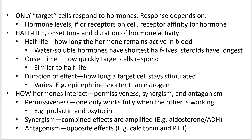Permissiveness, synergism, and antagonism are the last three terms. Permissiveness means one hormone only works to its full extent when another hormone is also present. For instance, prolactin stimulates mammary glands to make milk, and oxytocin stimulates the mammary glands to eject milk — but if you don't have prolactin, you won't make milk and oxytocin won't work.